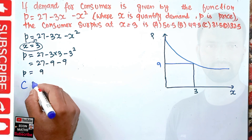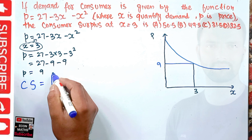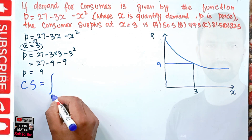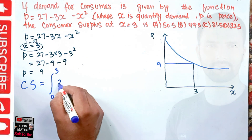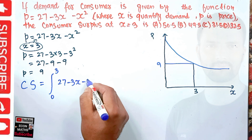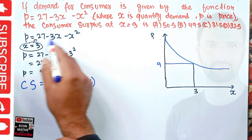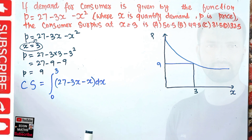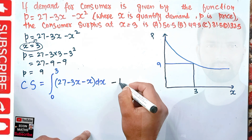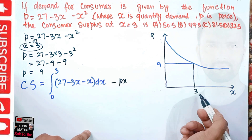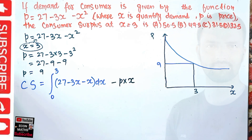To calculate this area, we use integration. Consumer surplus is given by the definite integral from 0 to 3 of (27 minus 3x minus x squared) dx, from which we subtract the total expenditure. Total expenditure is price times quantity, which is p times x, i.e., 9 times 3. Solving this definite integral will give us the consumer surplus.